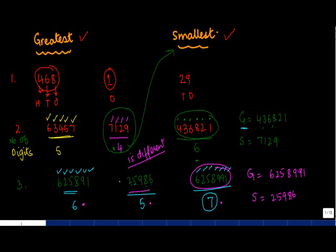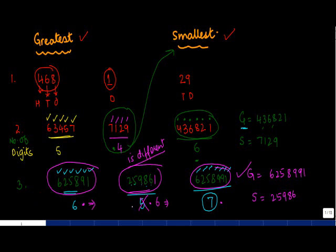This methodology is not applicable if the number of digits is the same. For example, if I add a digit to one of the numbers so that two of them have six digits each, the rule still identifies the seven-digit number as greatest, but how do I compare the two six-digit numbers? That is not covered in this video. In the next video, I will explain how to find the greatest and smallest when the number of digits in given numbers is equal. Thank you for being with us today.